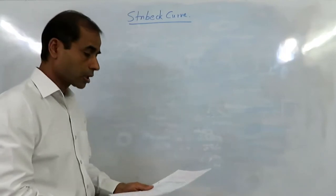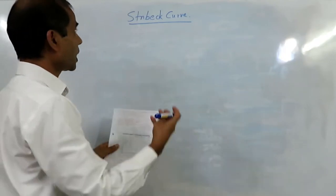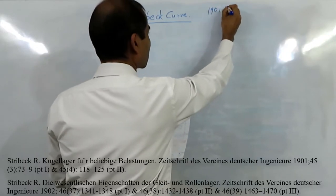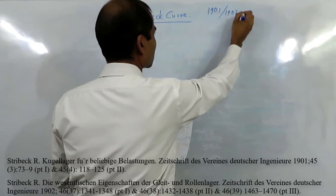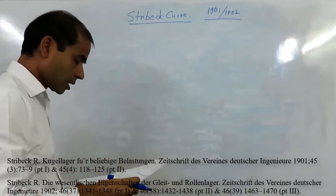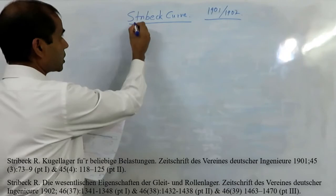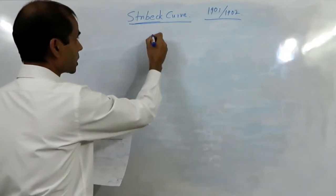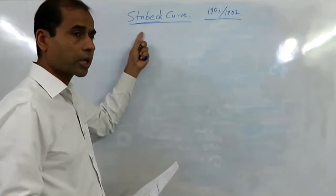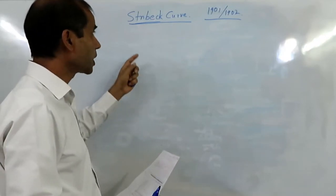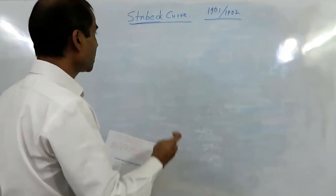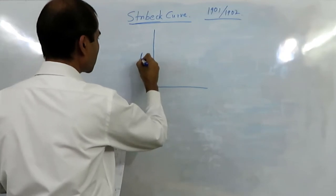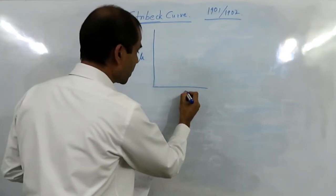The Stribeck Curve is used in lubrication and it was proposed in 1901–1902. Stribeck, a German engineer, found out through experiments — he was working on railway axles and journal bearings and ball bearings — the relation between coefficient of friction and speed.